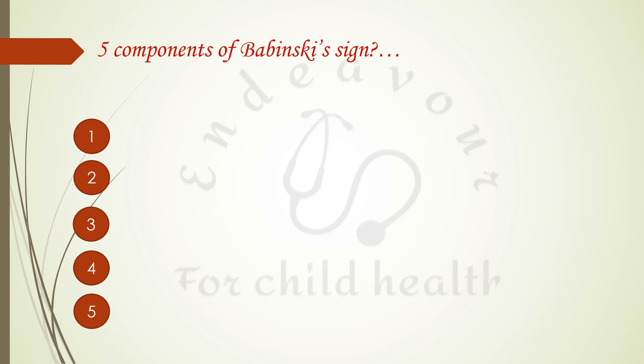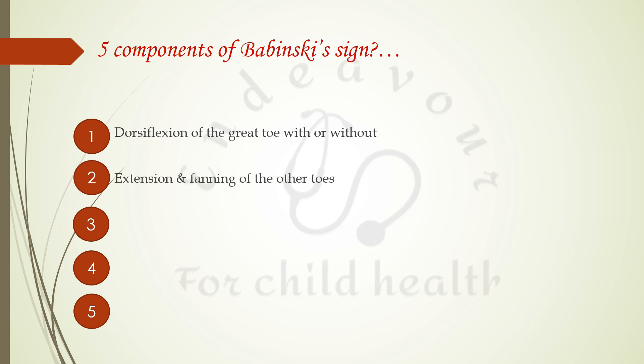The Babinski sign has five components: dorsiflexion of the great toe with or without extension and fanning of the other toes, dorsiflexion at the ankle, flexion of the knee, and contraction of the tensor fasciae latae. One must remember that only the extensor plantar response is called Babinski's positive. A flexor plantar response is not known as Babinski's negative — so there is no term as negative Babinski sign.